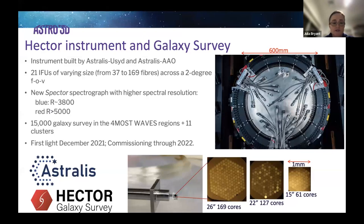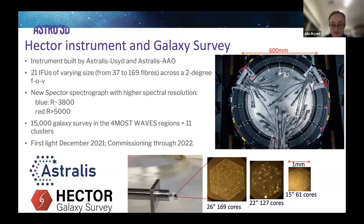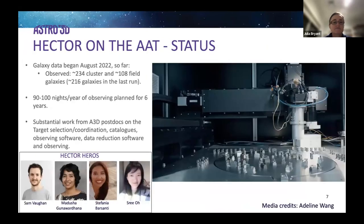The Hector instrument had first light in December 2021, with commissioning throughout 2022 — but in totally abysmal weather; some months we only had 20% actual clear time. However, we got there in the end, and galaxy data started being taken in August 2022.